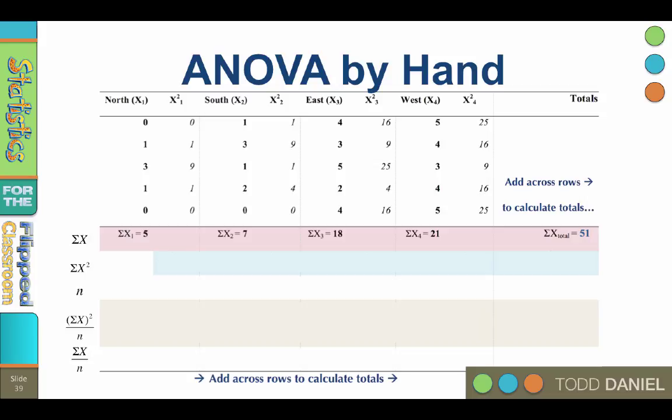So now let's sum the x squared columns, and we will calculate the sum of x squared total. The total sum of x squared is 187.